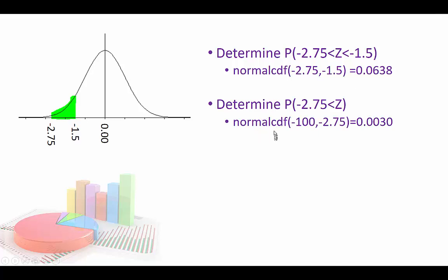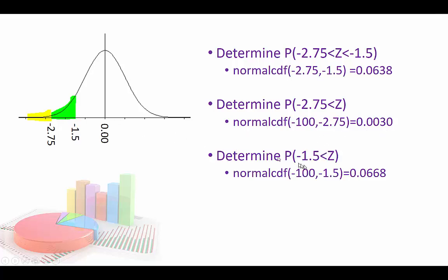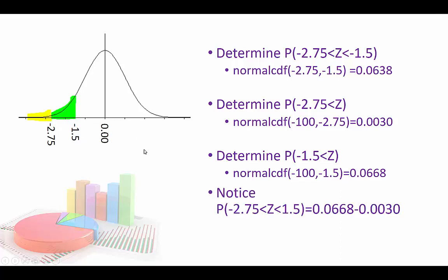If I wanted the probability that it's less than negative 2.75, that's this yellow area. On the calculator I'm starting all the way to the left, so I use negative 100 to negative 2.75, and I get 0.0030. If I want the probability to the left of negative 1.5, I use negative 100 to negative 1.5 and get 0.0668. Notice that adding the green and yellow gives the same result as taking the total and stripping out the yellow — there are a couple of different ways to look at it.